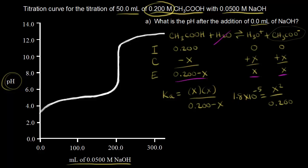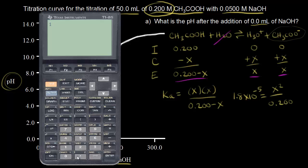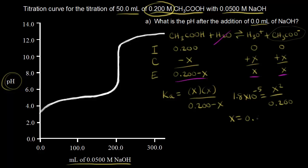We can now solve for X. Multiplying 1.8 × 10⁻⁵ by 0.200 gives 3.6 × 10⁻⁶, and taking the square root gives X = 0.0019. X represents the concentration of hydronium ions at equilibrium.